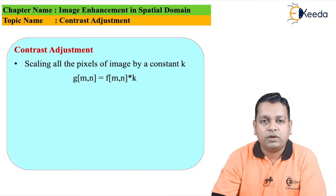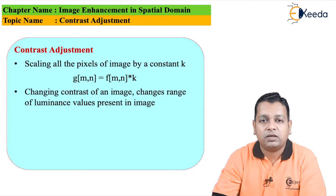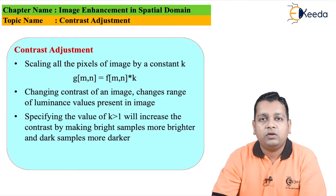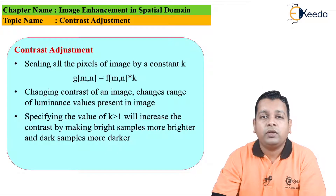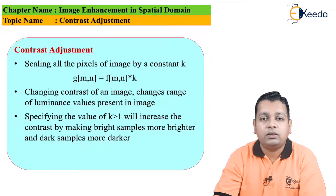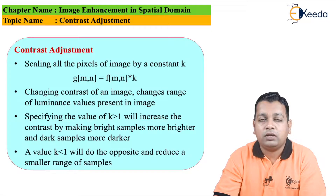For contrast adjustment, changing the contrast of the image changes the range of luminance values present in the image — luminance referring to brightness — so that better visualization is obtained. Specifying the value of k gives us three cases: k can be greater than 1, equal to 1, or less than 1. If k equals 1, there is no change in the input image pixel intensities, so it is not a contrast adjustment. If k is greater than 1, it increases the contrast by making bright samples brighter and dark samples darker. If k is less than 1, it does the opposite and reduces the range of the samples.